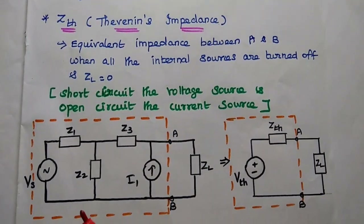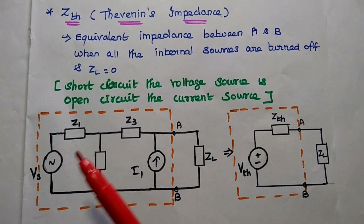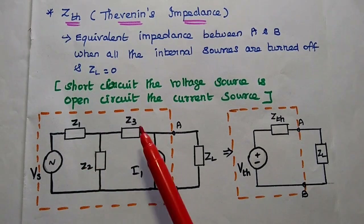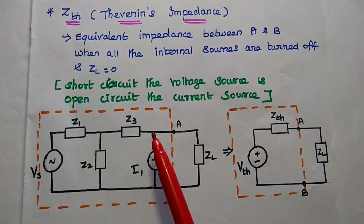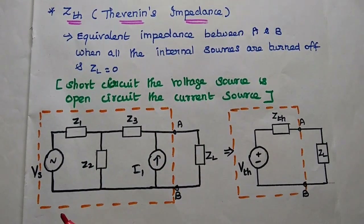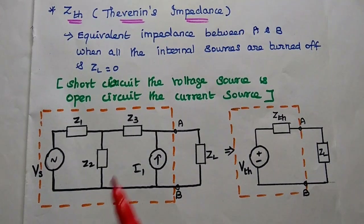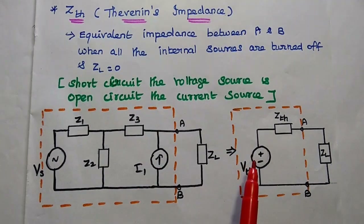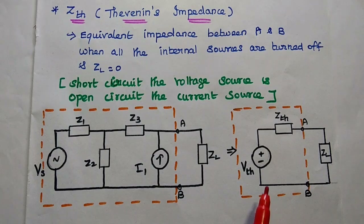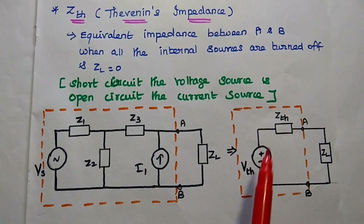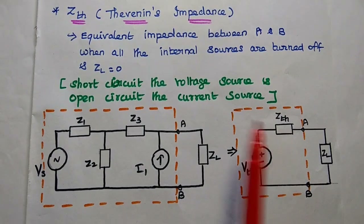We can consider a circuit which has a number of impedances Z1, Z2, Z3, a current source, and a voltage source. This complex circuit can be simplified using the Thevenin's equivalent circuit — VTH in series with the equivalent impedance.